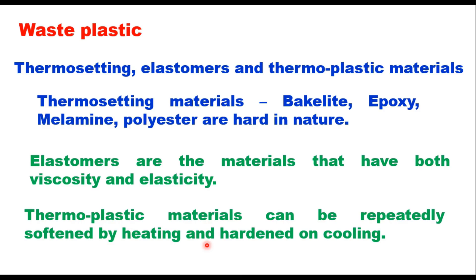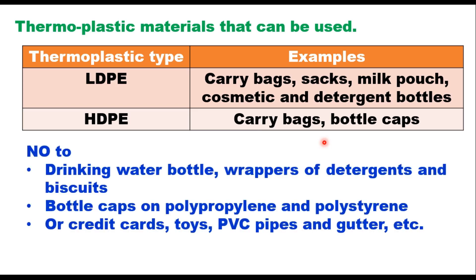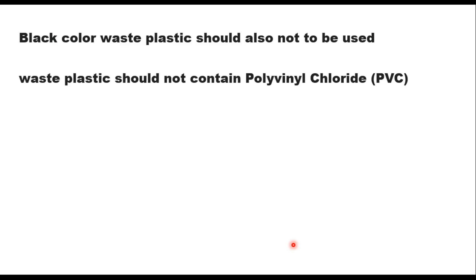The third type is thermoplastic materials. Thermoplastic materials can be repeatedly softened by heating and hardened by cooling. IRC SP 98 suggests that only LDPE (low density polyethylene) and HDPE (high density polyethylene) should be used in road construction. Examples of LDPE are carry bags, sacks, milk pouches, cosmetic and detergent bottles. Examples of HDPE are carry bags and bottle caps. Materials like drinking water bottles, wrappers of detergents or biscuits, bottle caps of polypropylene and polystyrene, credit cards, toys, PVC pipe offcuts, etc. should not be used in road construction. Black color waste plastic is a result of repeated recycling and therefore its use is not recommended.